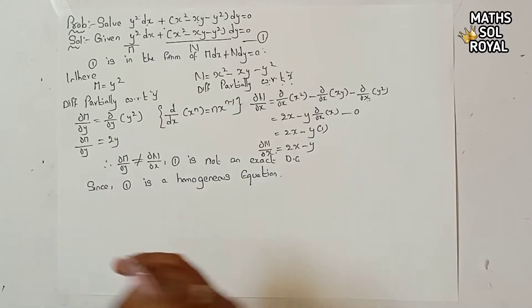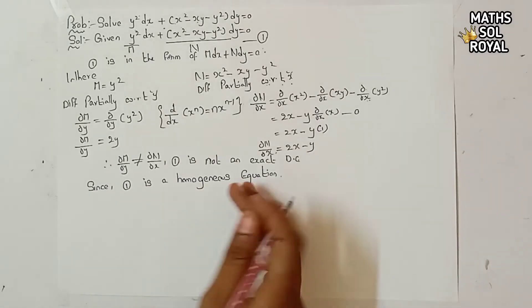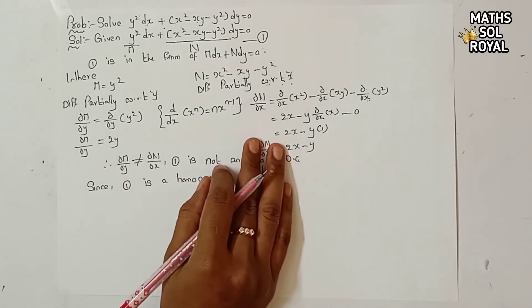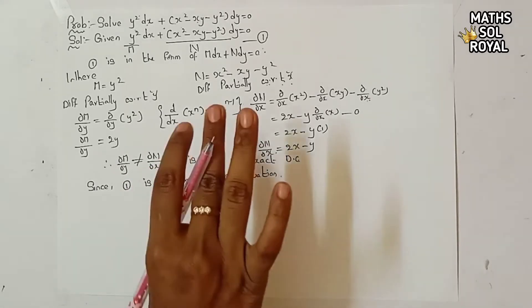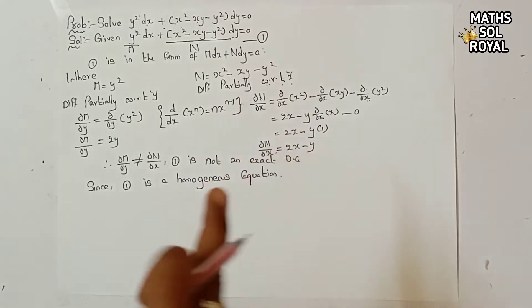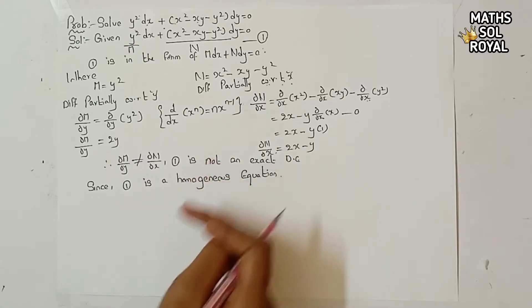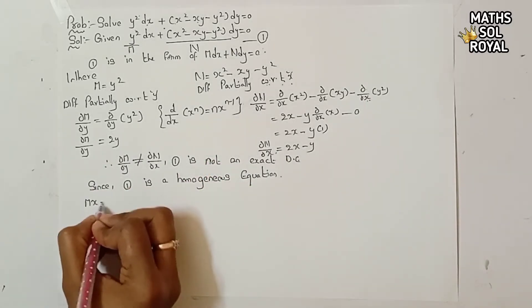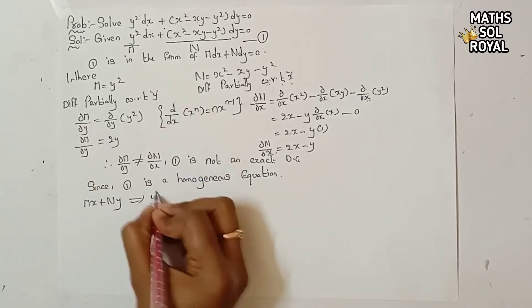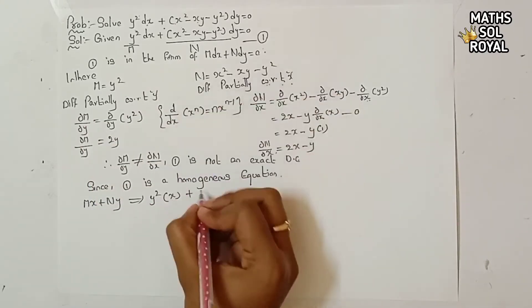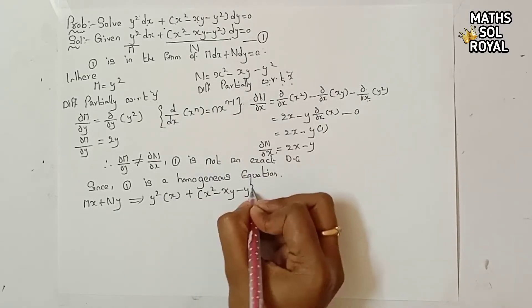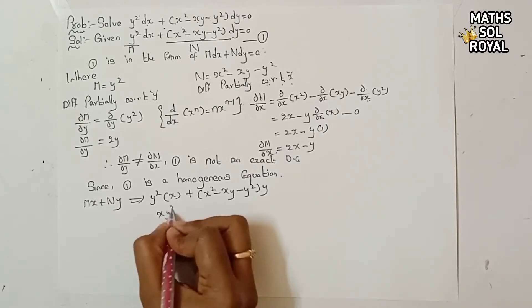Since equation 1 is a homogeneous equation, we use Method 1. The next step is to find Mx + Ny. Here M = y² and N = x² - xy - y², so Mx + Ny = y²·x + (x² - xy - y²)·y.